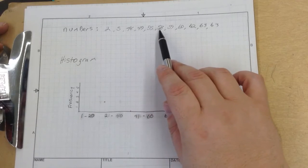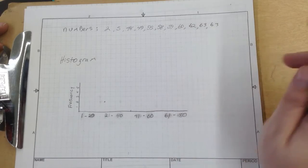2, 5, 48, 49, 55, 58, 59, 60, 62, 63, and 63.